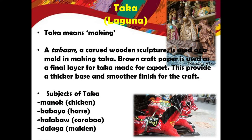Now let's move on to another place also known as the resort capital of the Philippines — the province of Laguna. As to their material being used in artworks, there is what we call taka, which means making. At the takaan, a carved wooden sculpture is used as a mold in making taka. Brown craft paper is used as a final layer for taka made for export, providing a thicker base and smoother finish. Taka refers to paper mache made using a carved wooden sculpture as a mold. The craft originated in the town of Paete, Laguna. Common and traditional subjects of taka include the manok or chicken, caballo or horse, kalabaw or carabao, and the dalaga or maiden, which are made primarily for local use.